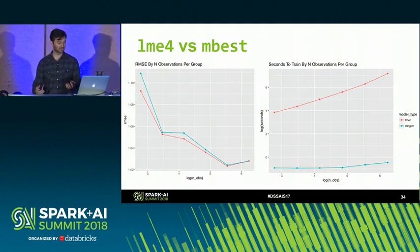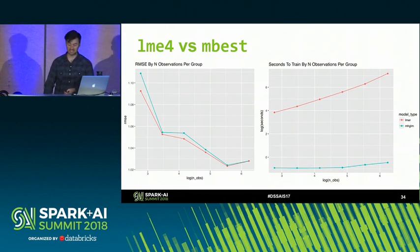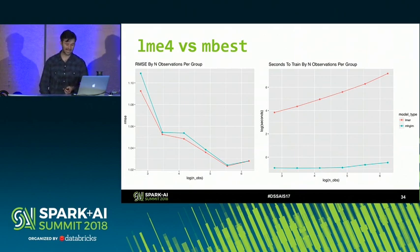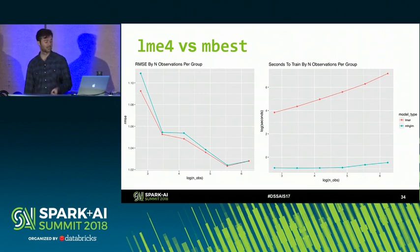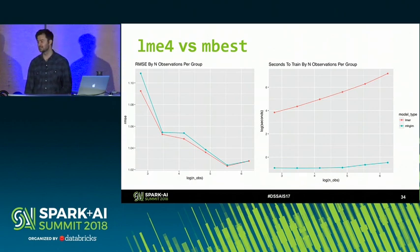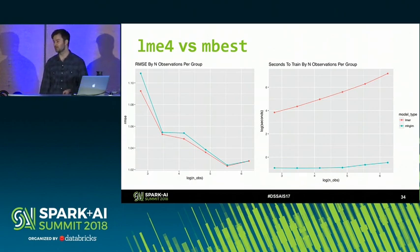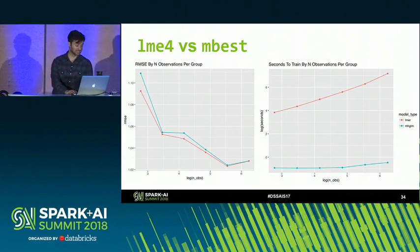Here's a plot comparing LME4 and MBEST, still in the R world, using the same simulation data. On the left, root mean squared error shows that LME4 is slightly better than MBEST, but the difference is fairly small and diminishes with more data. On the right, the y-axis is log seconds to fit — MBEST is much, much faster than LME4 and scales much better. This really unlocks a variety of practical problems in recommender systems and data science in general.